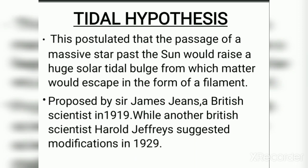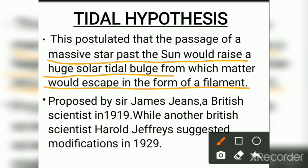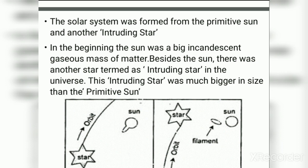There are five most discussed theories on the origin of Earth. In this part, three of them are explained: the Tidal Hypothesis, Binary Star Hypothesis, and the Interplanetary Dust Hypothesis. The Tidal Hypothesis was proposed by Sir James Jeans in 1919 and Harold Jeffreys in 1929.